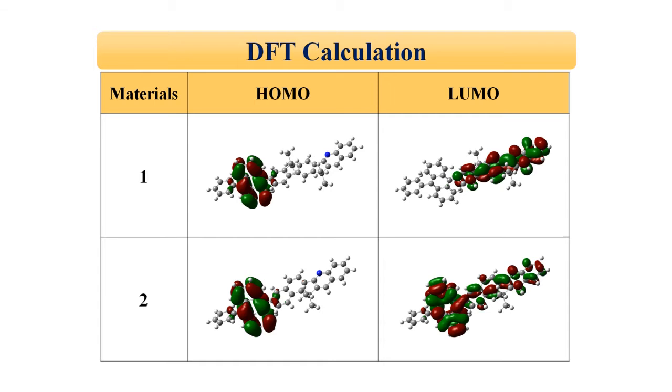To determine the electron distribution and structural features of two materials, DFT calculations were carried out using a suite of Gaussian programs. The electron cloud distributions of HOMO and LUMO are displayed.